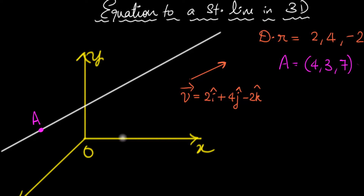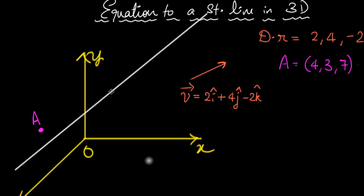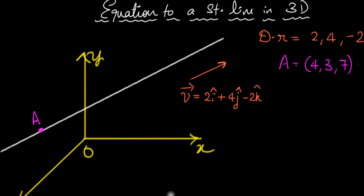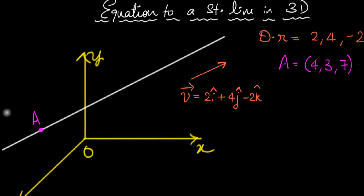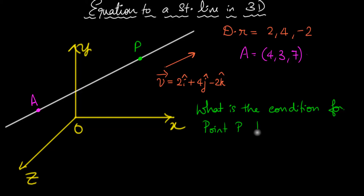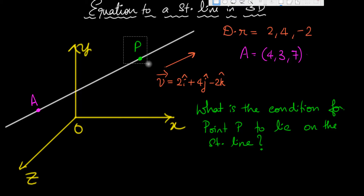If you were to imagine this straight line, you would first fix the orientation by making it parallel to this vector, then fix the position. With these two pieces of information, our straight line is fully determined. The question now is: what is the general equation to this straight line? What we mean is: what is the condition for a point P to lie on the straight line?